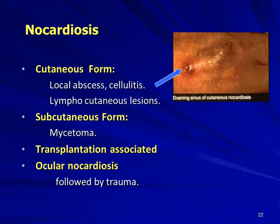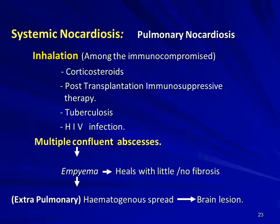Ocular nocardiosis can follow trauma to the eye contaminated with soil. The most dangerous form is systemic nocardiosis seen in immunocompromised individuals — including those on chronic corticosteroids, post-transplantation immunosuppressive therapy, those with HIV infection, or other chronic diseases. When these people inhale Nocardia from soil, it can set up systemic nocardiosis.